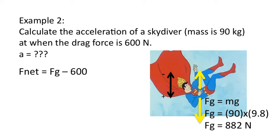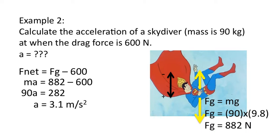But this time, what's different? Well, this time you have the 600 newtons opposing the motion. So when we write our F net statement, it's not just simply the weight. The net force this time is the weight minus the 600 newtons, the drag force. F net is again Ma. That's 882 subtract 600. Substituting the mass, we get an acceleration of 3.1 meters per second squared.